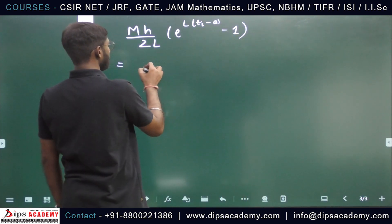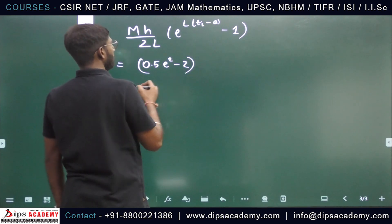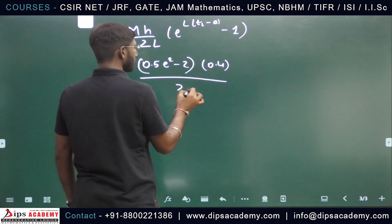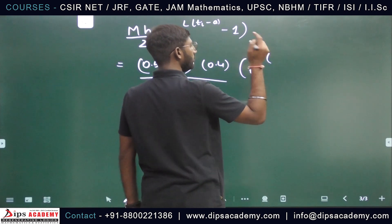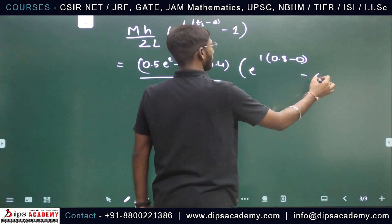So, putting the m value: 0.5*(e squared minus 2). m is done. h is 0.4. 2 times L which is 1, e to the power 1, ti which is the point 0.8, a is 0, minus 1.